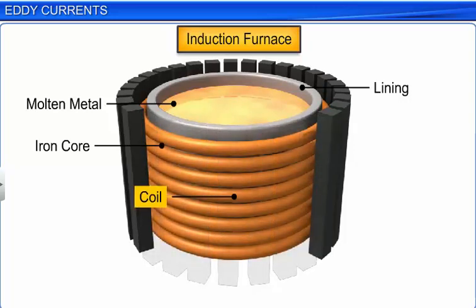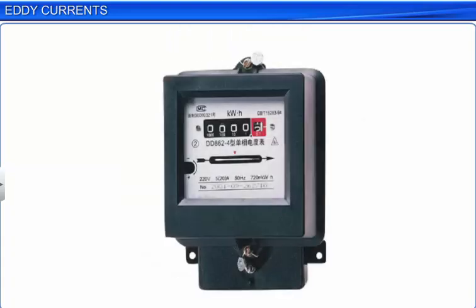Induction furnace can be used to produce high temperatures and can be utilized to prepare alloys by melting the constituent metals. A high-frequency alternating current is passed through a coil which surrounds the metals to be melted. The eddy currents generated in the metals produce high temperatures sufficient to melt it.